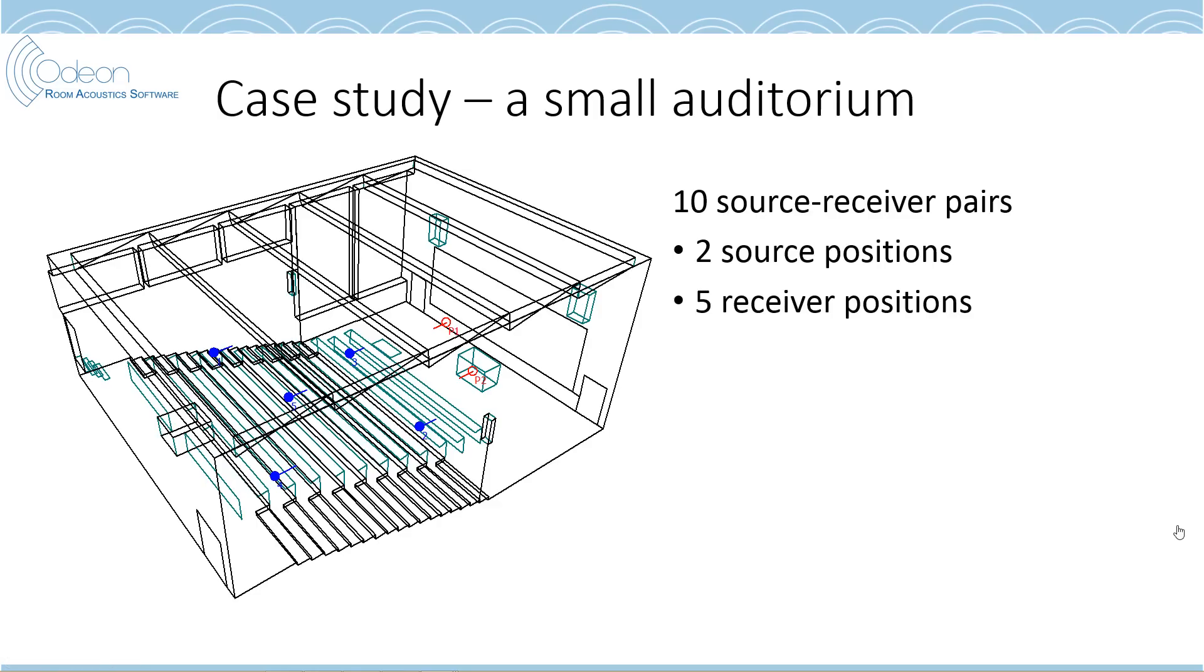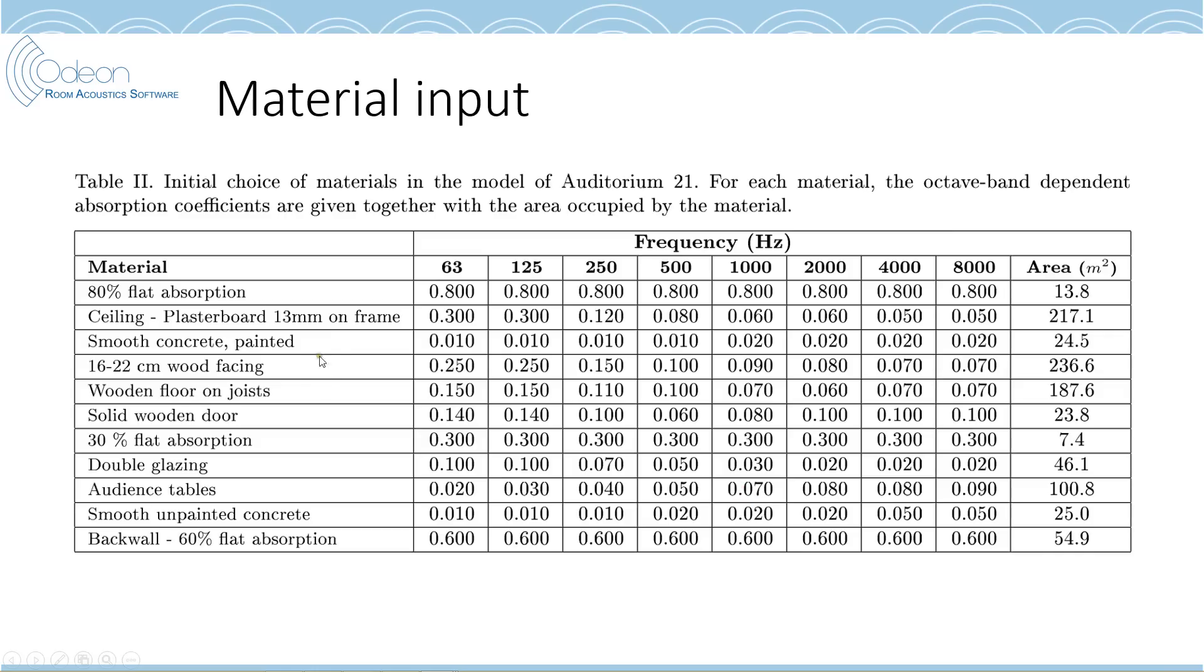So, this was selecting search space. The case study we have here is a small auditorium, and we have 10 source-receiver pairs. We have two source positions, five receivers. Then we had our initial materials. I'll not go more into what the different absorption coefficients are, but that's what we said. This must be it. And you just select your materials assigned to different surfaces. And then you have, by doing this, in this case, I think, 11 different groups of materials, which can be varied within some search range.